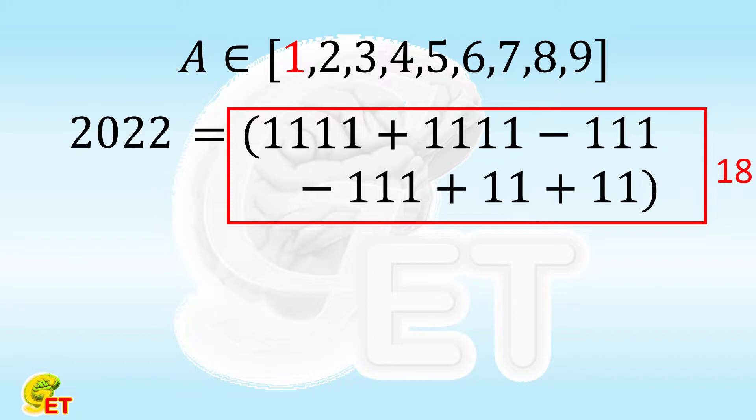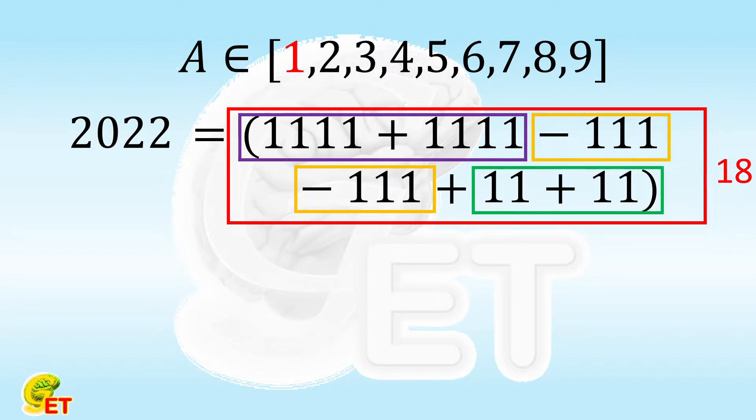We used 1,111 for twice, 111 for twice, and 11 also for twice. So we can combine them as 1,111 minus 111 and plus 11, and finally multiplied by 2. What is 2? 2 is 1 plus 1. This time, we only used 1 for 11 times.